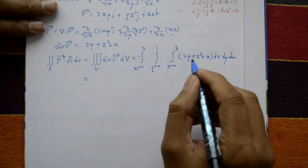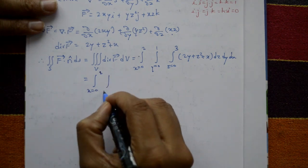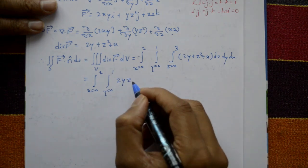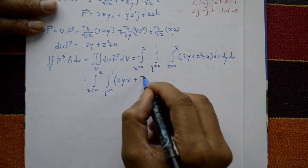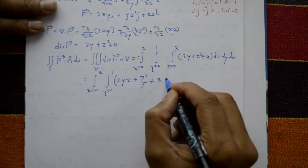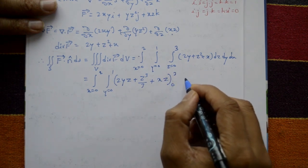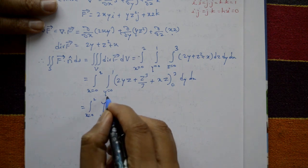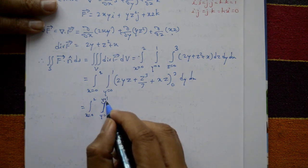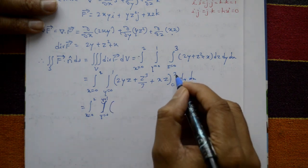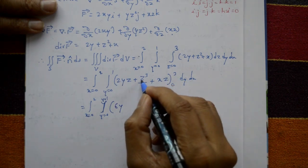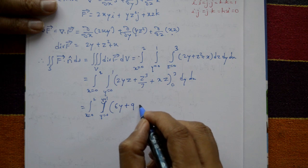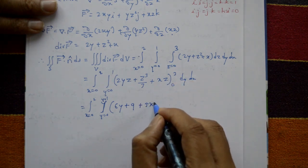Integrating with respect to z from 0 to 3: 2y is constant so it integrates to 2yz; z² integrates to z³/3; x is constant so it integrates to xz. Evaluating from 0 to 3: 2y·3 = 6y, z³/3 at z=3 gives 27/3 = 9, and xz at z=3 gives 3x. So after z-integration we have the integrand 6y + 9 + 3x, to be integrated over x from 0 to 2, y from 0 to 1.